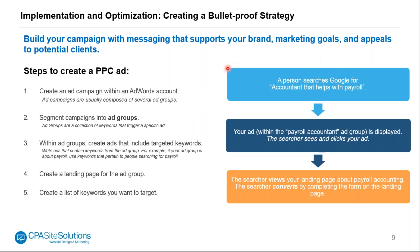Once you create a campaign, you're going to want to segment the keywords under that specific campaign by creating ad groups. If you think of a broad keyword like 'taxes,' you'd drill it down to more specific types like individual or business tax filing, and those would be separated with an ad group. Ad groups are that collection or breakdown under a broad term that will trigger a specific ad that speaks to those keywords.